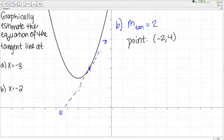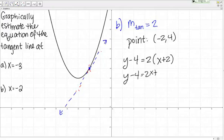To finish this out, I'm just going to use point-slope form to write the equation of the tangent line. That's going to be Y minus 4 equals 2 times X minus negative 2, which is X plus 2. Then if I solve for Y, Y minus 4 equals 2X plus 4. Then add the 4 to the other side, I get Y equals 2X plus 8.